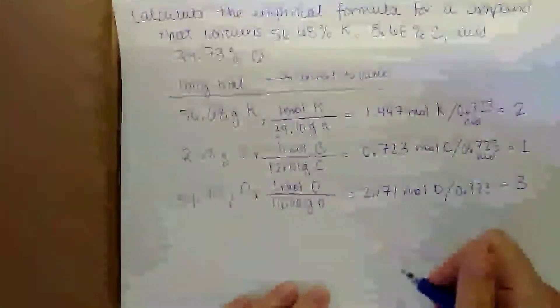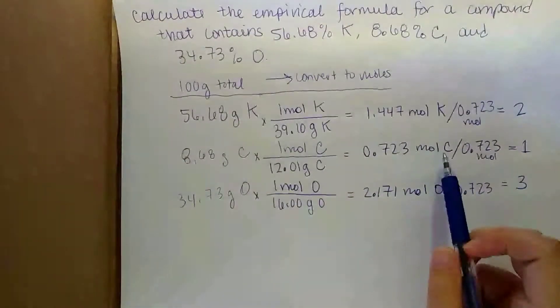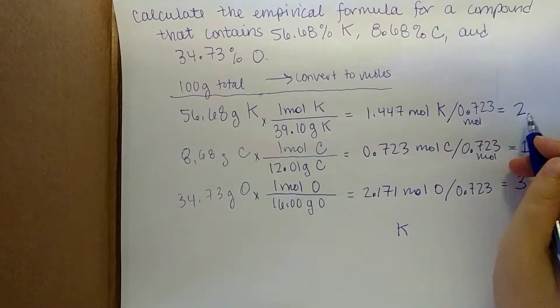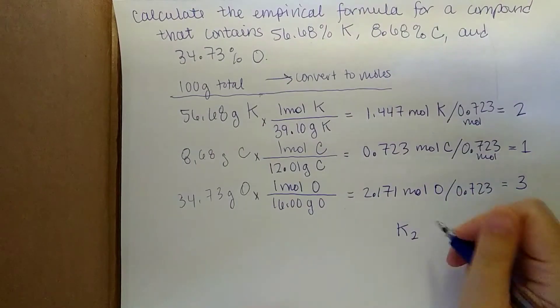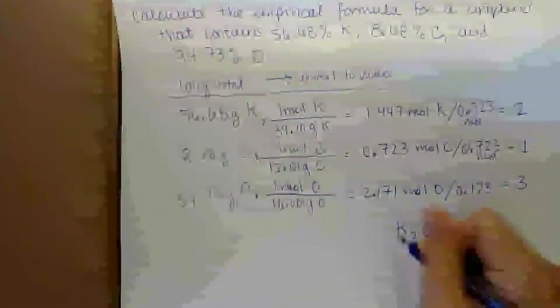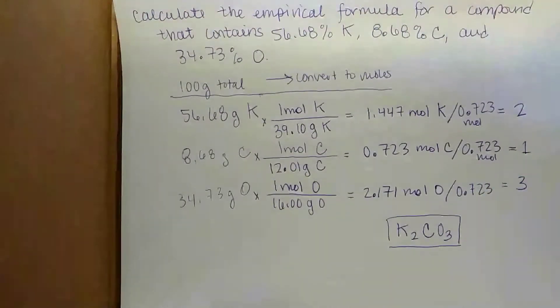So now that we have all of these mole ratios, we can use it to write down our empirical formula. So for potassium, we ended up with two moles. We have only one carbon, and we have three oxygens. So this is our empirical formula for the compound.